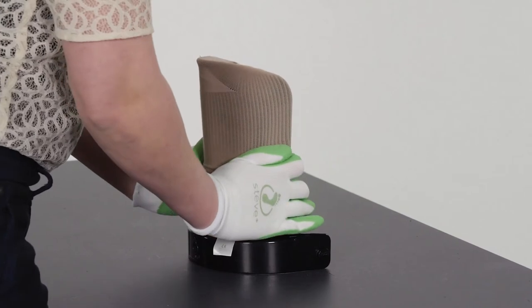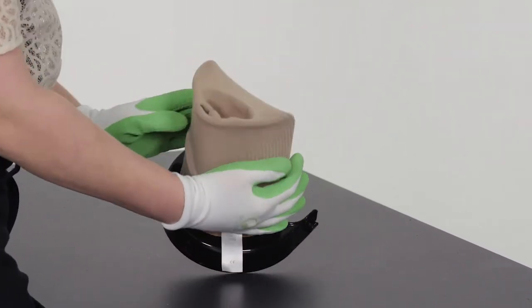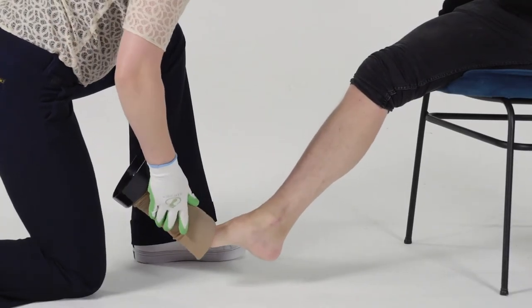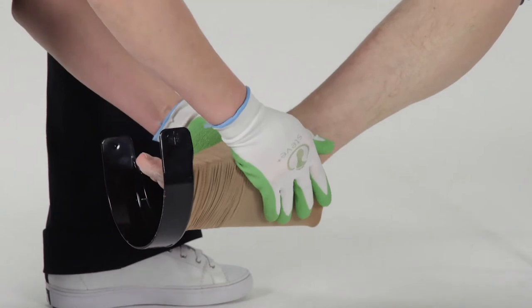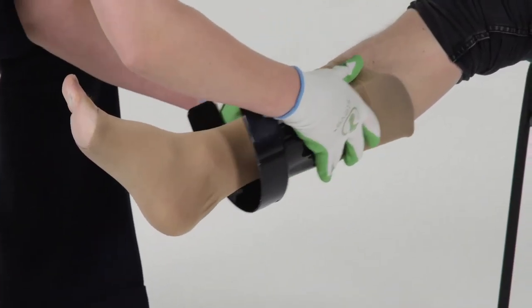Slide Steve Plus Easy On fully over the patient's foot. Place your hands around the stocking and push the Steve Plus Easy On donning aid with short upward movements along the client's foot and leg. The Steve Plus Easy On goes first over the heel and then the stocking is quickly on until the knee.